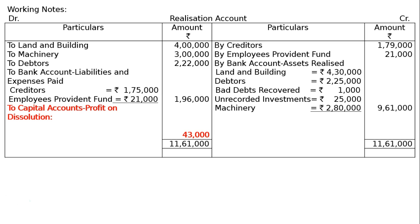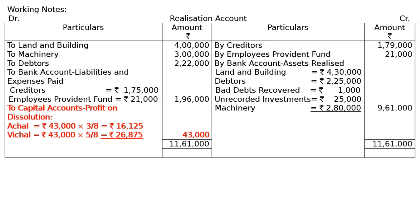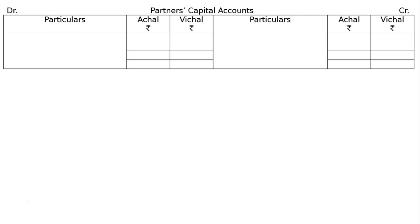The profit on dissolution is transferred to capital accounts: for Achal that is 3/8, for Vichal that is 5/8. Rs. 43,000 × 3/8 = Rs. 16,125 for Achal; Rs. 43,000 × 5/8 = Rs. 26,875 for Vichal. Now go down to the capital accounts of Achal and Vichal.